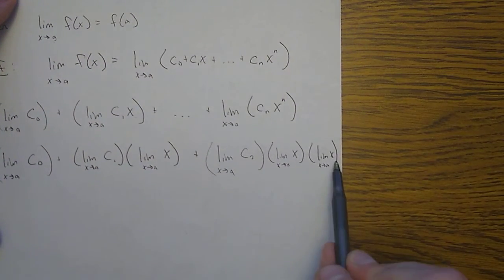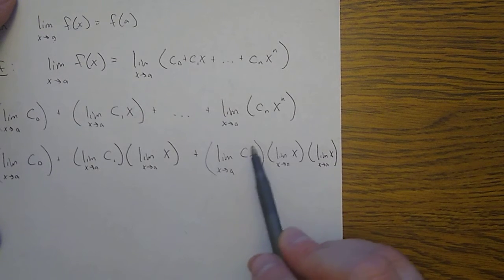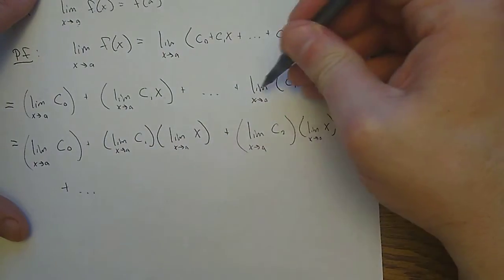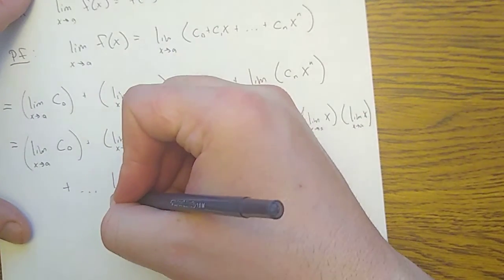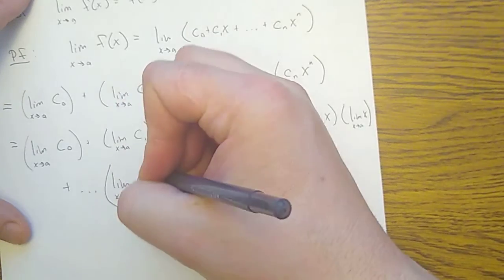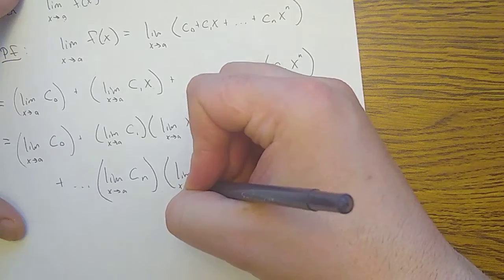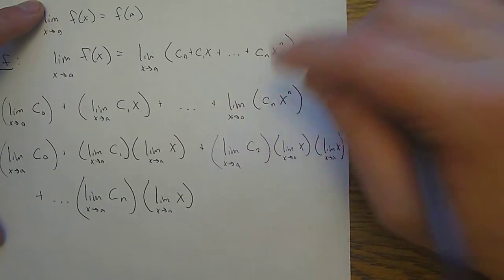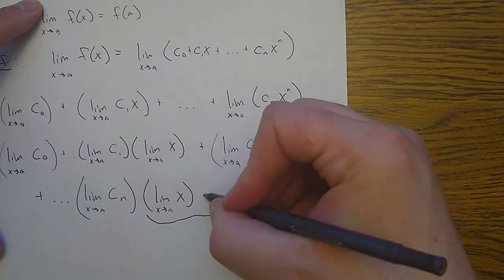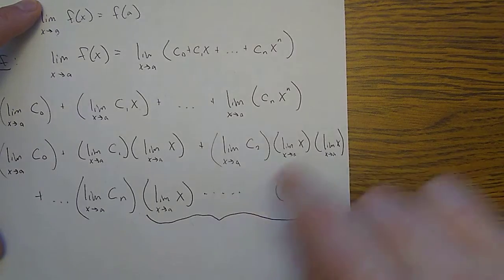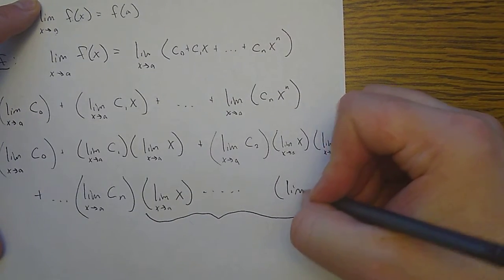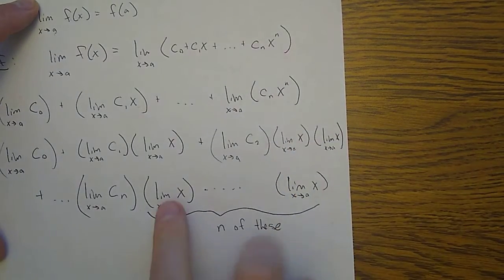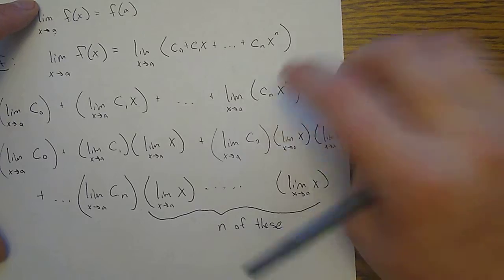So c2x squared gets broken down like this: c2 times x times x, and I do the limit of each one separately — limit of c2, limit of x, and another limit of x. I keep going until I hit the last one, which would be limit as x goes to a of cn, times the limit as x goes to a of x, repeated n times. Because x to the n is like x times x times x n times, so I do the limit of x times the limit of x times the limit of x — n of these.